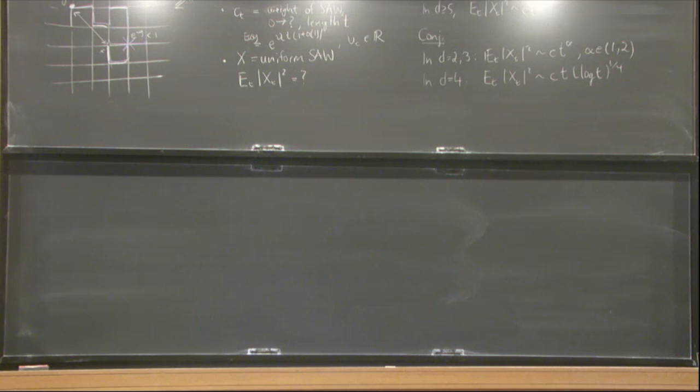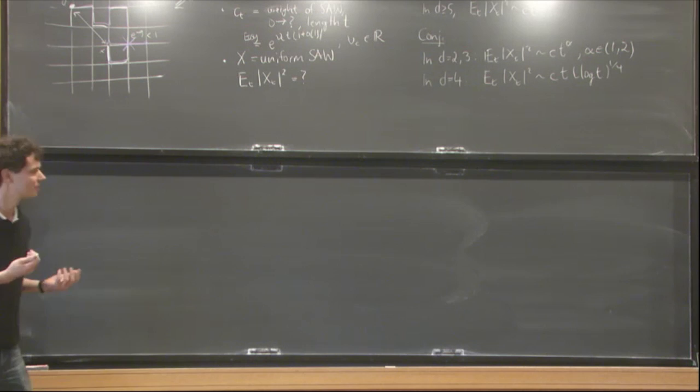That is believed. It's known for dimensions one and five, or five and more, essentially. Not known for the dimensions in between. But it's believed that even if g is extremely small, the behavior is the same. For two, it's explicit. For three, it isn't. For two, it's five over four over three, I believe.